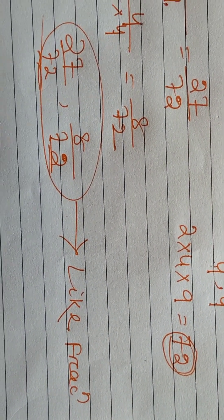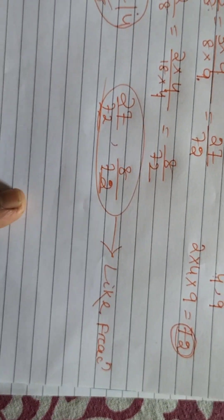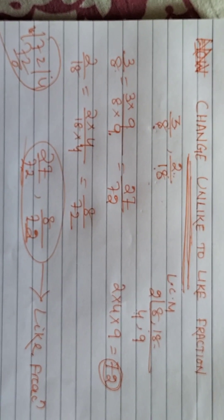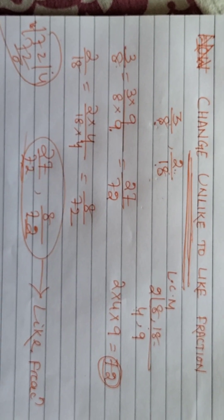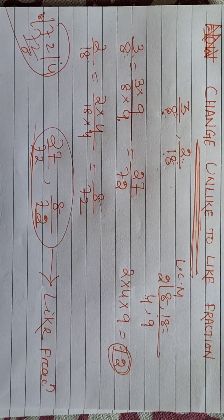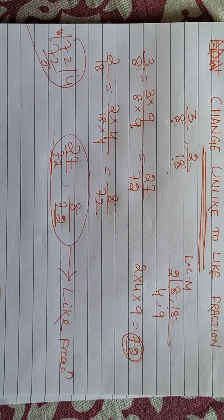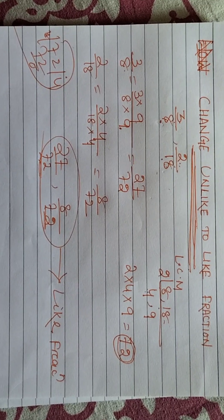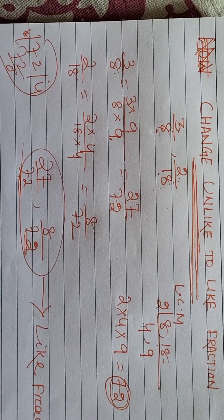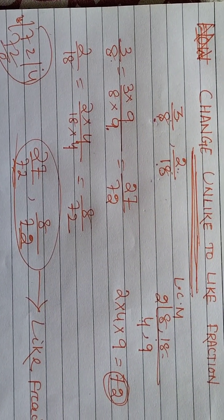So we have converted unlike fractions to like fractions. Now let's see how we can arrange them in ascending order or descending order.